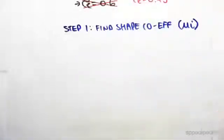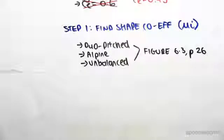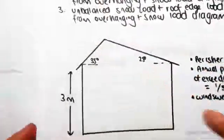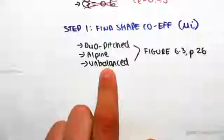If we look back at our problem, our problem was duo pitched, it's in an alpine region, and now we're looking at the unbalanced case. So if I show you a diagram again, this is our problem. We're in an alpine region, parish valley, it's duo pitched, and we're looking at the unbalanced case now.